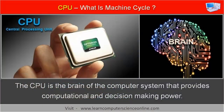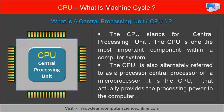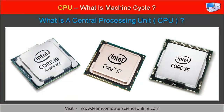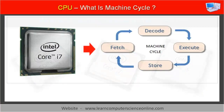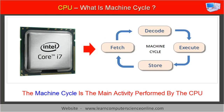Let us start with the CPU. The CPU stands for Central Processing Unit. The CPU is the brain of the computer system, which provides the processing power to the computer system. The CPU controls all the operations performed by the computer system, including the activities necessary to execute the program. The machine cycle is the main activity performed by the central processing unit to execute the program instruction.